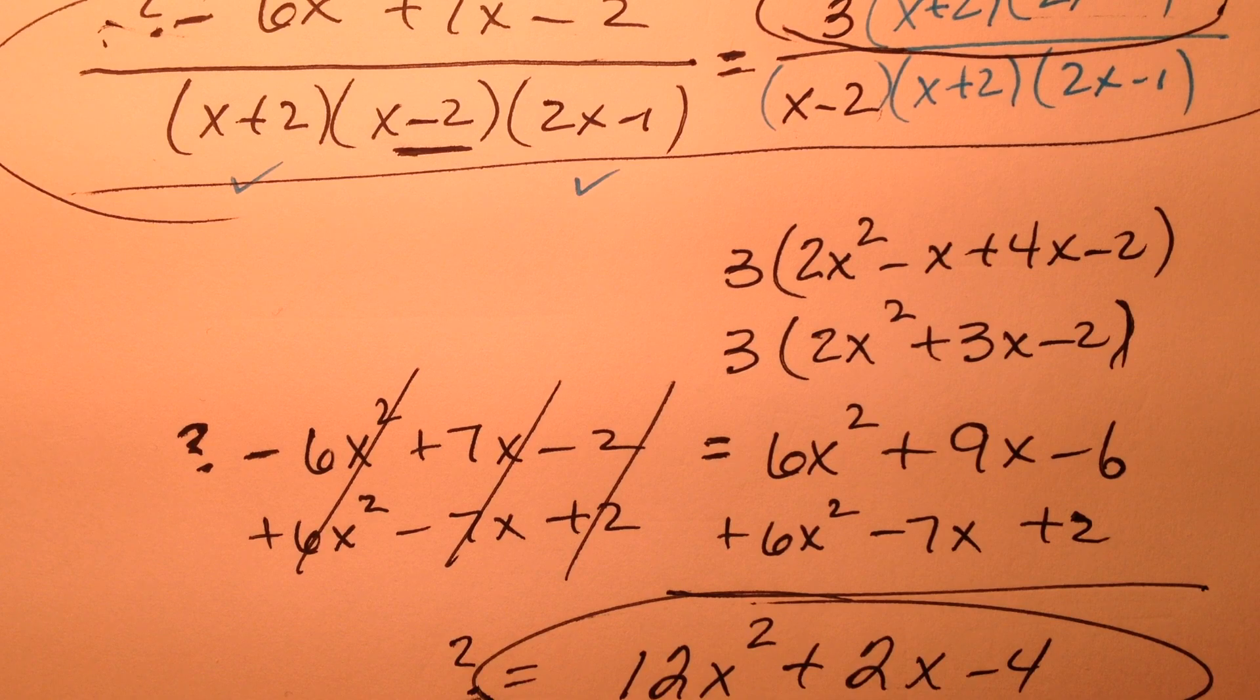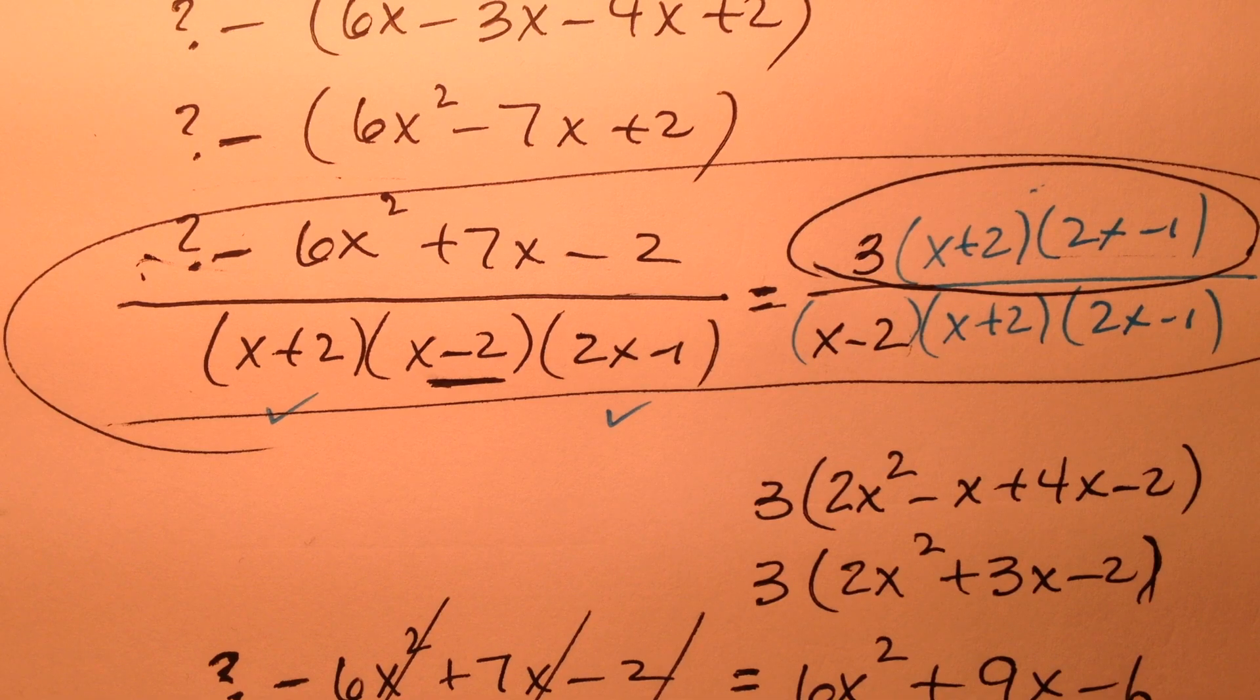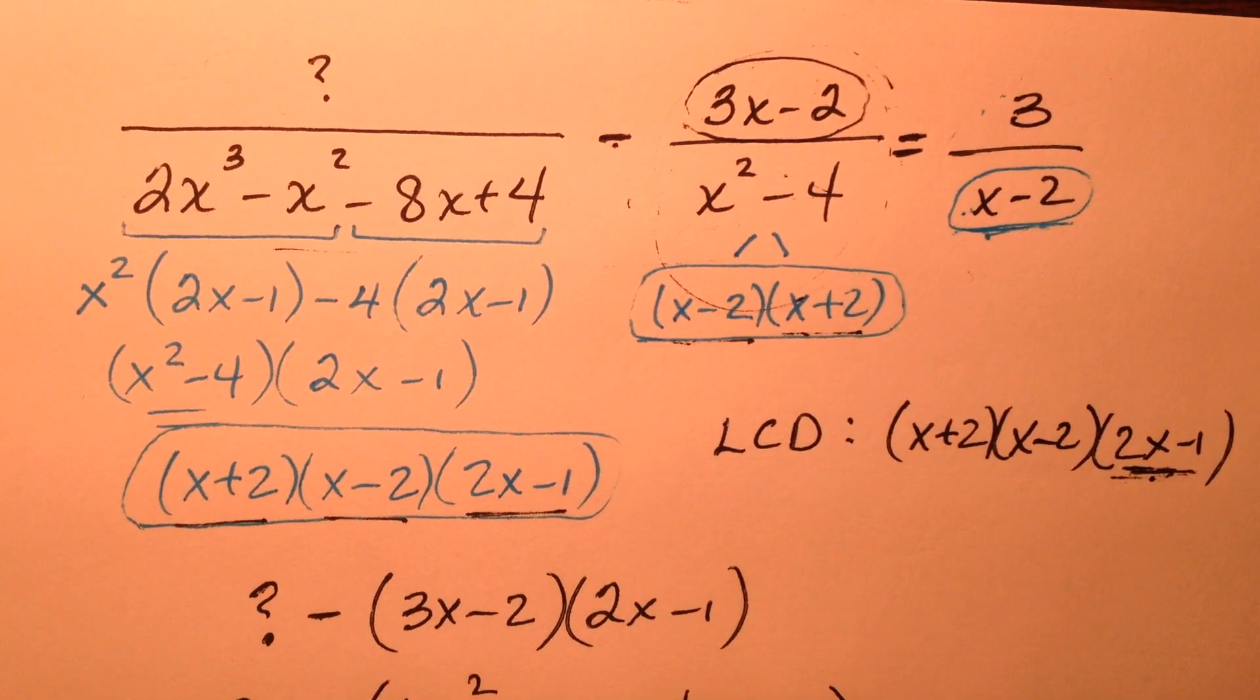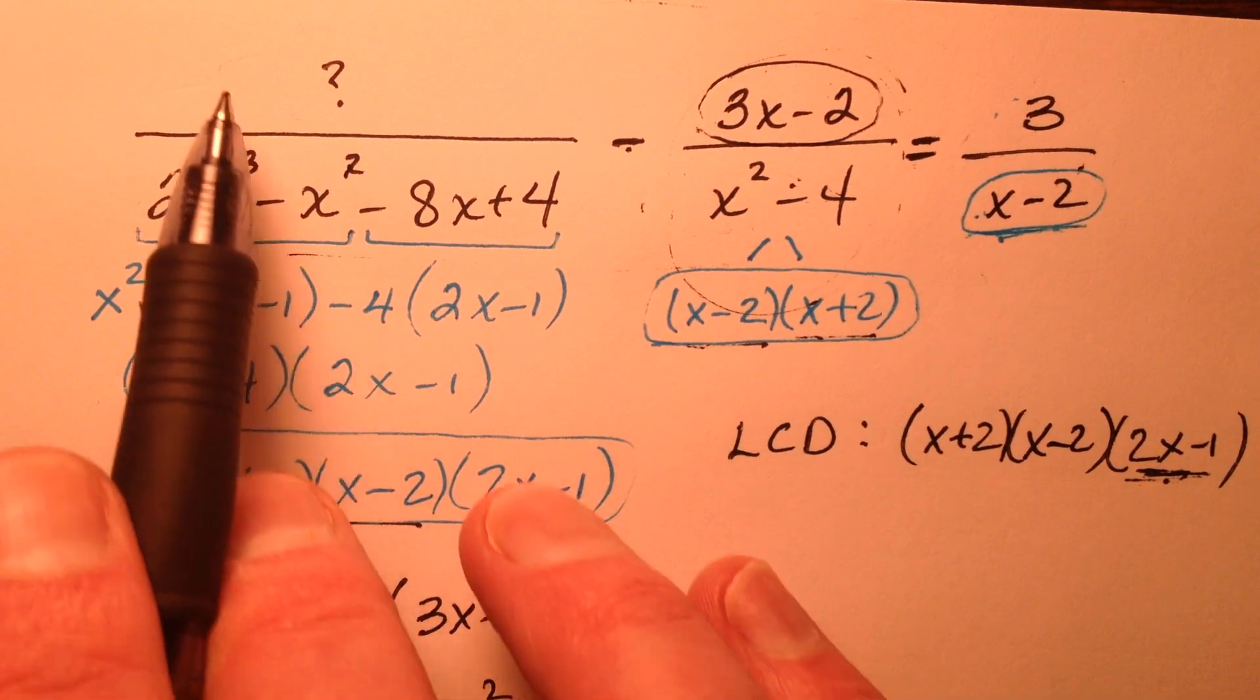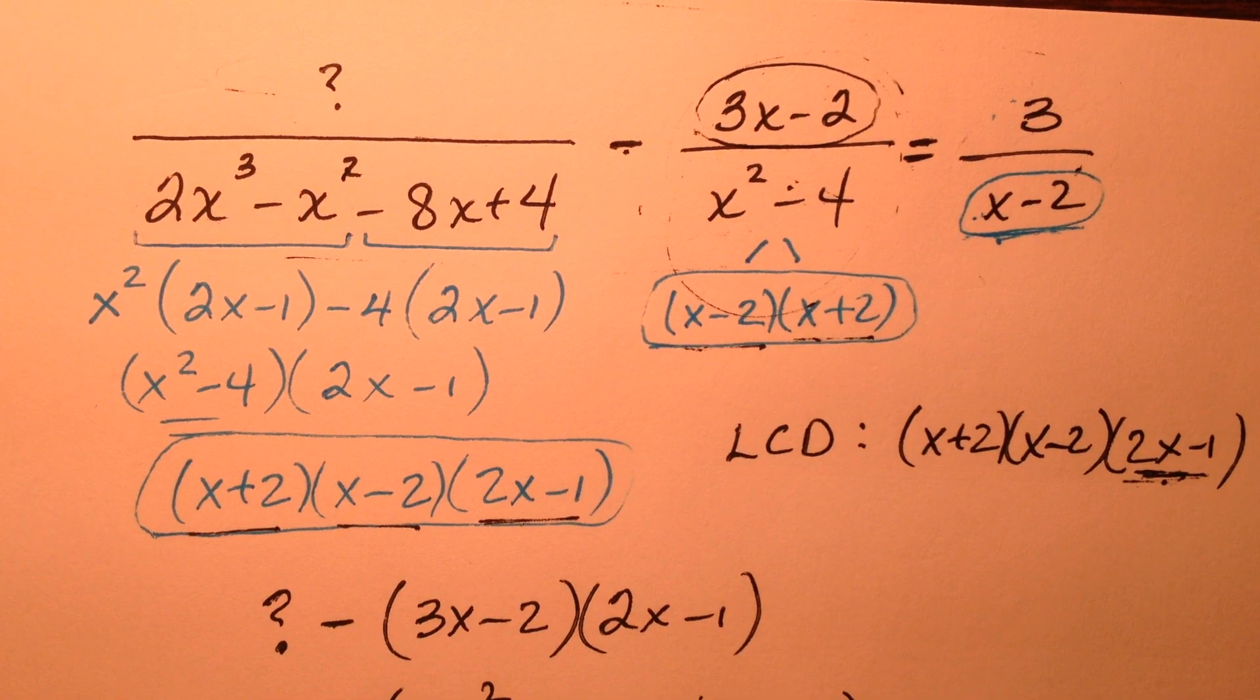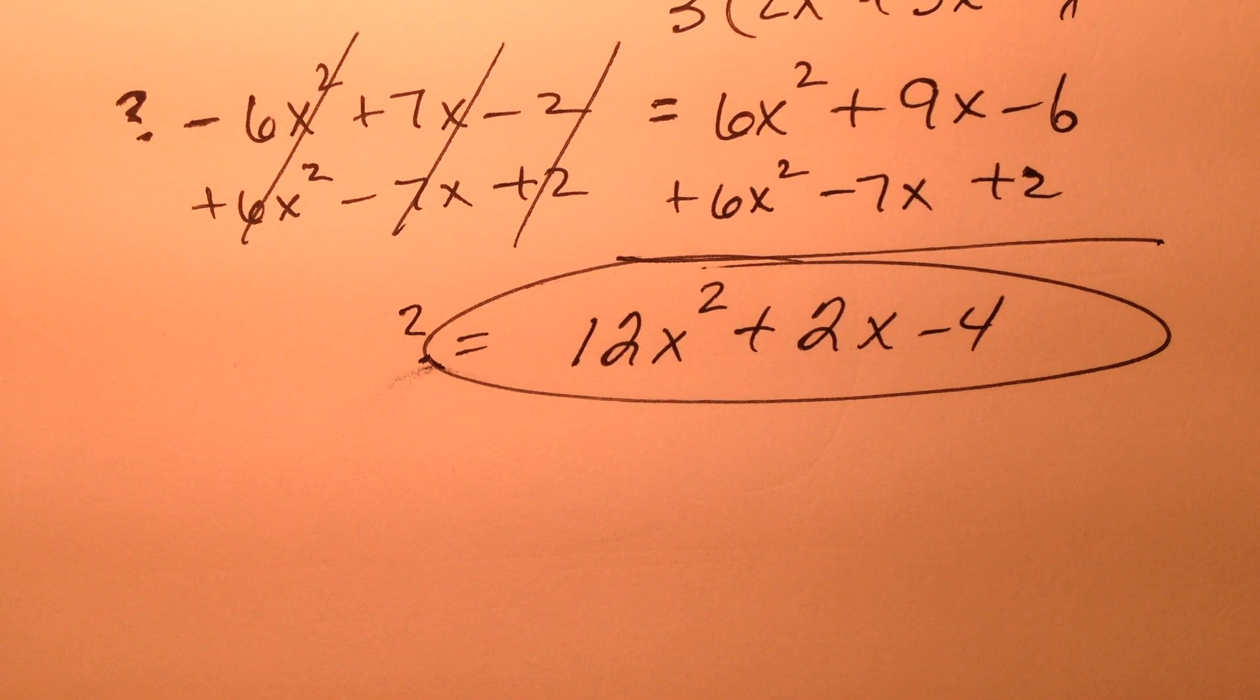So what did we do? Well, I worked through conceptually kind of what we were doing along the way, but the bird's eye view, kind of the big picture idea of what we did was get common denominators for every single rational expression and then just focus on solving the numerator equation that you're left with. So in that example, that missing polynomial was 12x squared plus 2x minus 4.